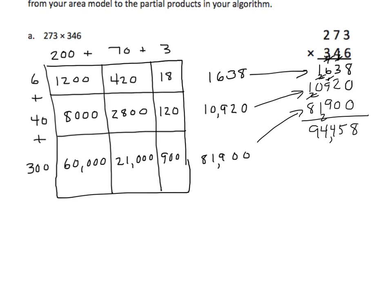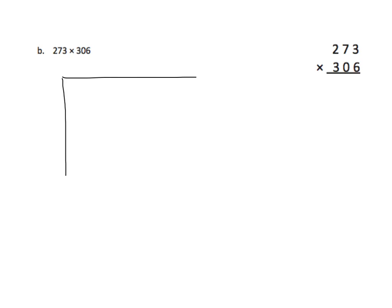Let's do one more example. I don't think we need more than a couple of examples here. And again, you're going to do some with the area model and standard algorithm, and others you're just going to do the standard algorithm. All right, this one's interesting — three digits by three digits once again. But notice that in the second factor, we have nothing in the tens place. Let's see what that means in terms of partial products. Let's start with our diagram. Once again, taking the first factor, we'll decompose it by place value.